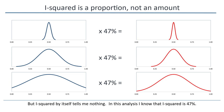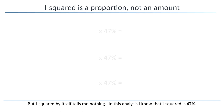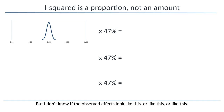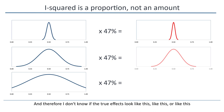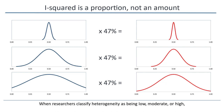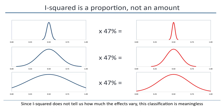I asked how much the effect size varies, and somebody tells me that I-squared is 47%. This means that 47% of the dispersion is real, but it doesn't tell me how much dispersion there is. If I know that the observed effects look like this and I'm told that I-squared is 47%, I could possibly figure out that the true effects look like this. But I-squared by itself tells me nothing. I know that I-squared is 47%, but I don't know if the observed effects look like this, or like this, or like this, and therefore I don't know if the true effects look like this, or like this, or like this.